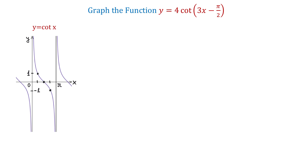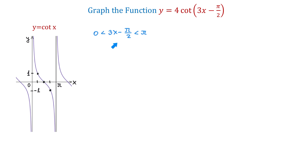Since the basic cotangent function completes one period as x changes between 0 and pi, our function will complete one period as 3x minus pi over 2 changes between 0 and pi. This means that this function will complete one period as 3x minus pi over 2 changes between 0 and pi.